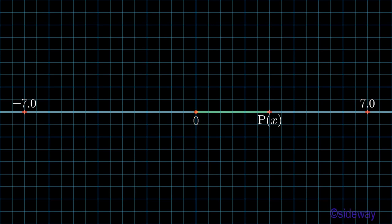In other words, each point is assigned a unique coordinate, and the coordinate of a unique point is given a unique real number.